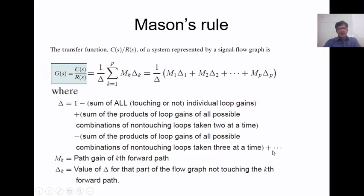mk is the path gain of the kth forward path. If there is only one forward path, this becomes m1. Delta-k is the value of delta for that part of the flow graph not touching the kth forward path — we use only the loop gains which do not touch the kth forward path. If we have one forward path, we call it delta-1.